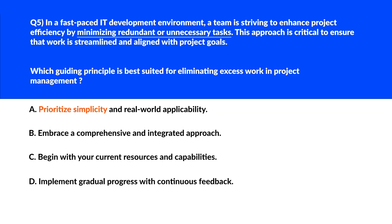This question is about minimizing redundant or unnecessary tasks. Option A is 'prioritize simplicity and real-world applicability.' This principle focuses on simplicity and practicality in all processes, aligning with the concept of eliminating unnecessary work in project management. We'll park this. Option B says 'embrace a comprehensive and integrated approach' — this is more about seeing the bigger picture and not necessarily about eliminating unnecessary work, hence incorrect.